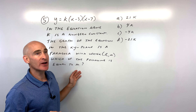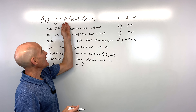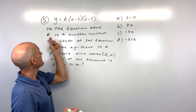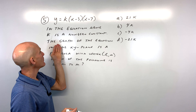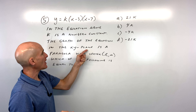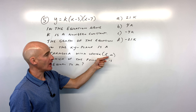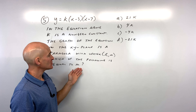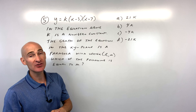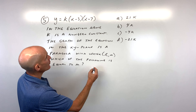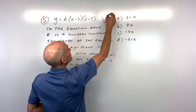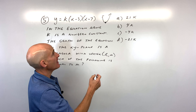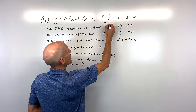Number five: y equals k times (x minus 3)(x minus 7). In the equation, k is a non-zero constant. The graph in the xy-plane is a parabola with vertex l comma m. Which of the following is equal to m? When they say it's a parabola, we know it has a U-shape and we're looking for that vertex point where the graph bends.